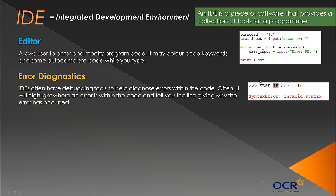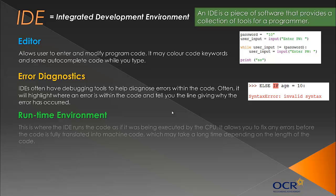For example, instead of using 'elif' we might have written 'else if', which goes against the rules of Python's syntax — and the debugger flags that. Another IDE tool is the runtime environment, where the IDE runs the code as if it was being executed by the CPU. It translates it into an intermediate language that can be run by the IDE, rather than fully by the CPU. It doesn't fully translate the code, meaning if you have any errors you can fix them before full translation occurs, saving you time.